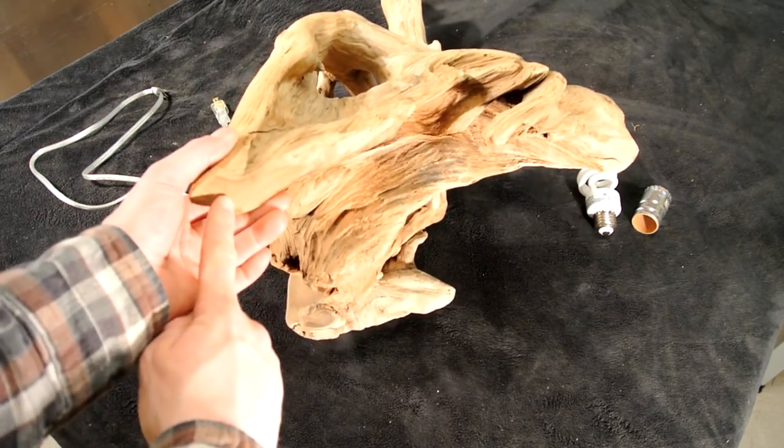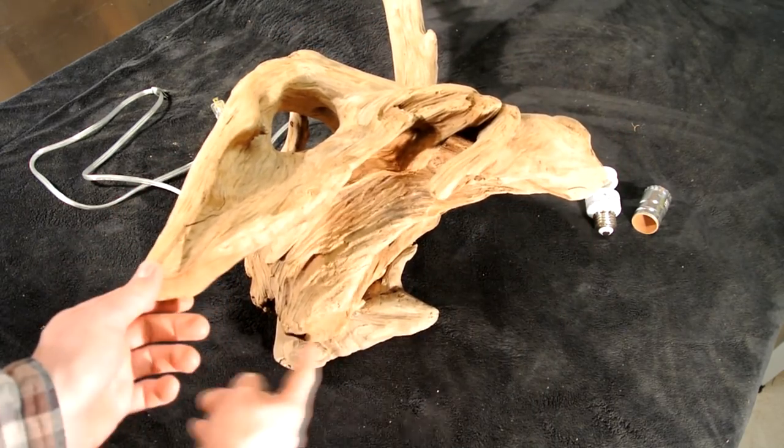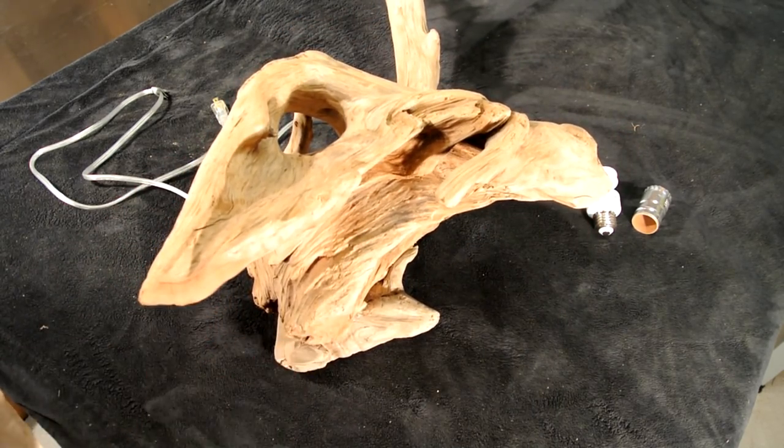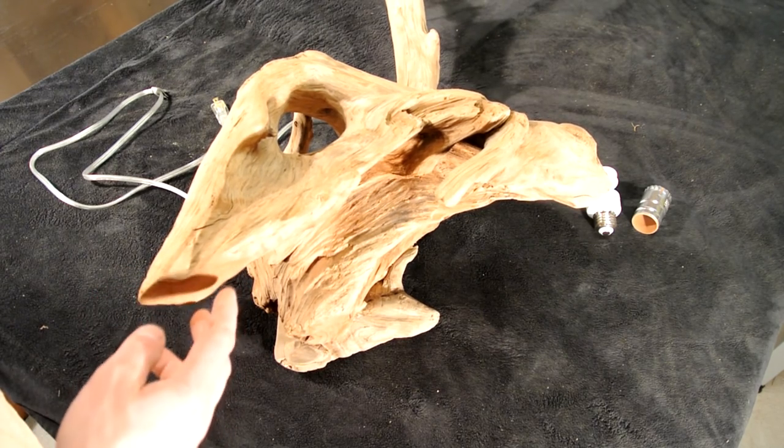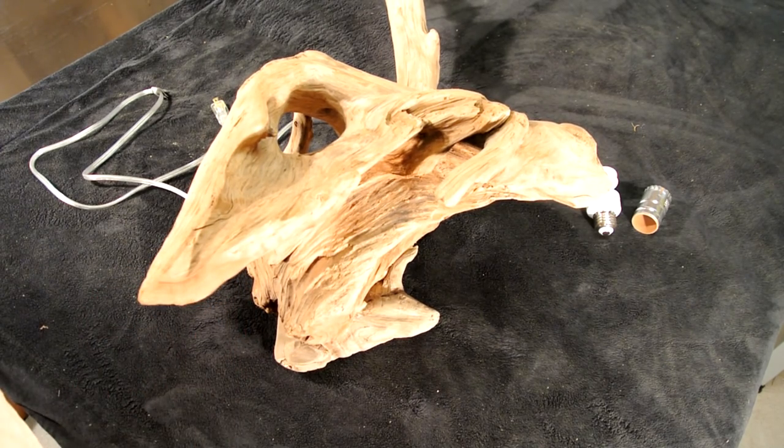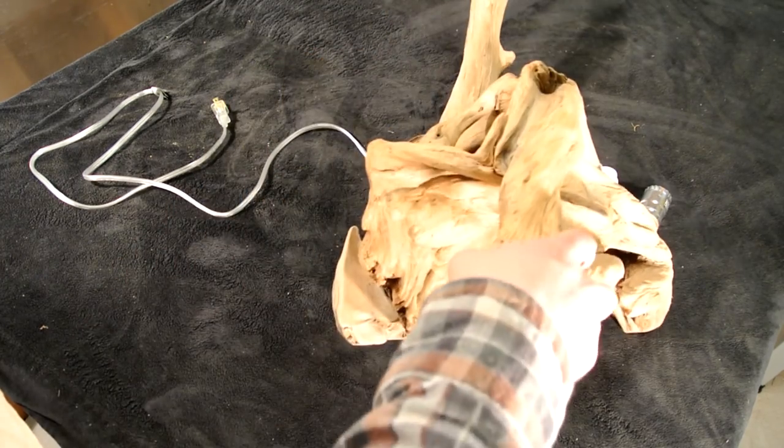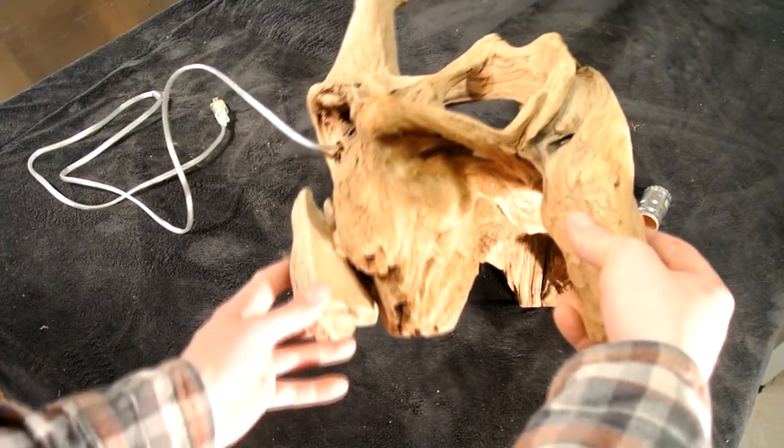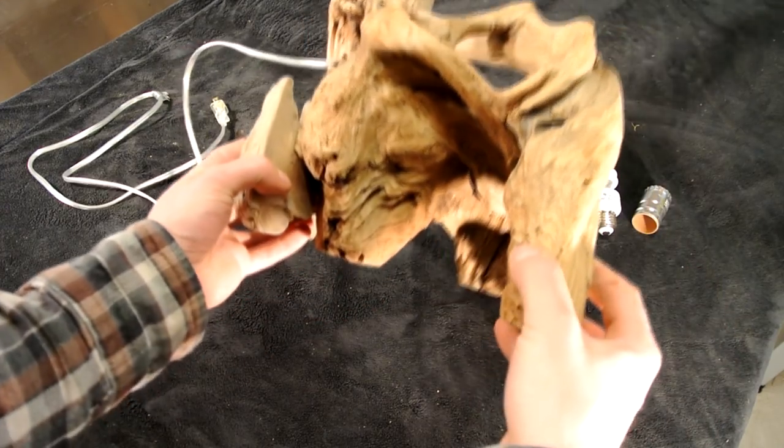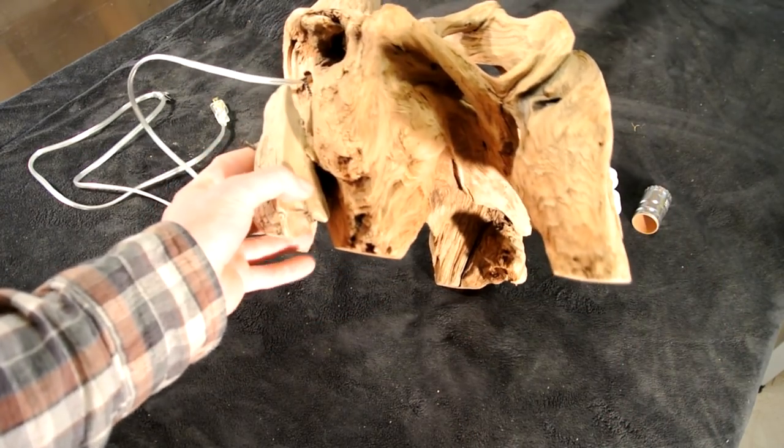But in the case of mine, I had to take three corners off: this corner, this one, and this one. How I did that is I actually took a belt sander to that and I just kept checking until I liked the stance it had on the tabletop.